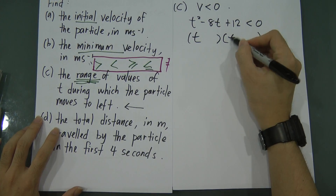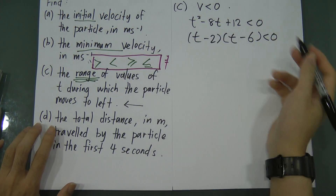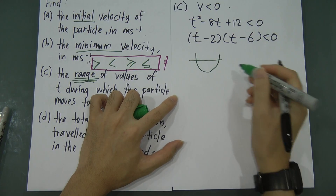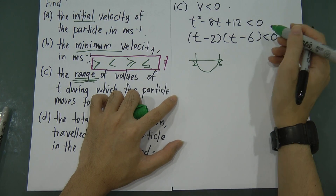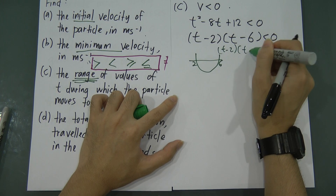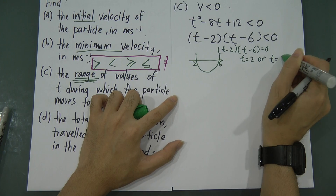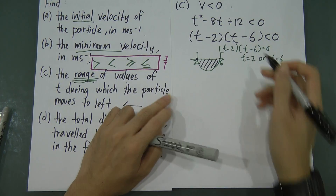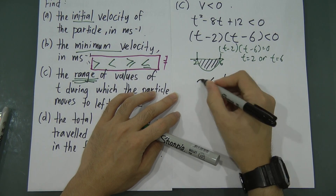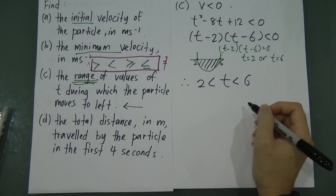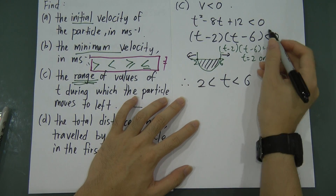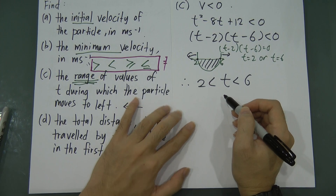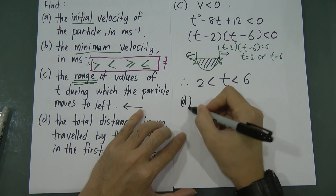From the inequality (t minus 2)(t minus 6) less than zero, drawing a number line with t equals 2 and t equals 6, and knowing that 'less than zero' means between the roots, we get 2 less than t less than 6. Whenever the result is 'less than', the range is between the two values. Be careful — since there is no 'equals' in the inequality, do not include the equals sign in your answer.